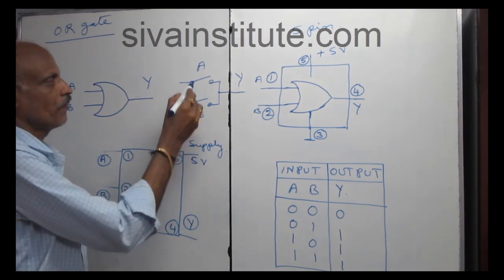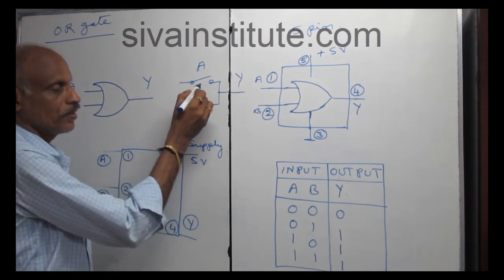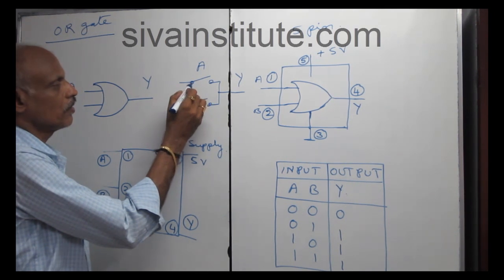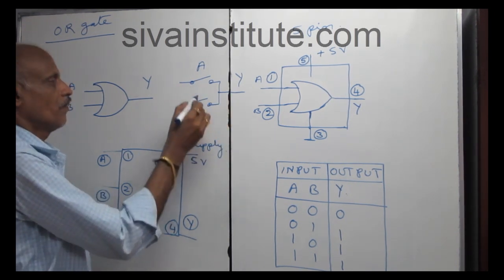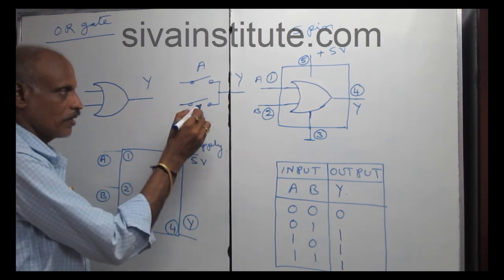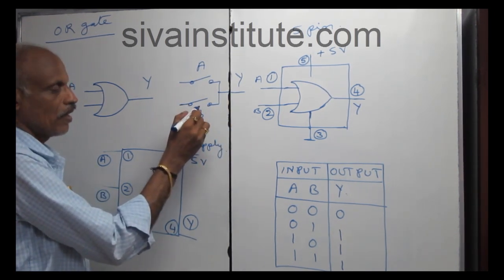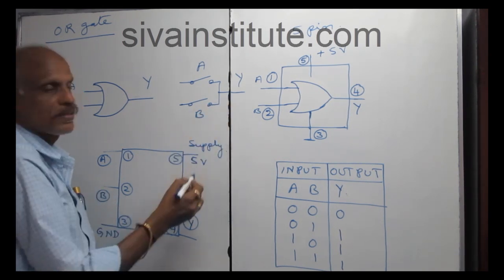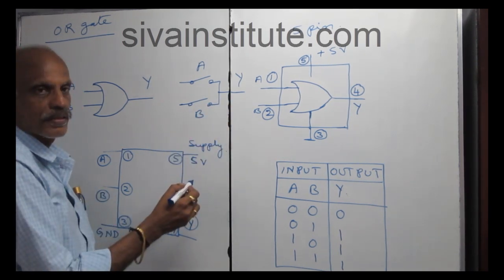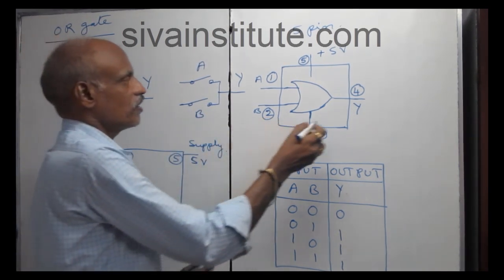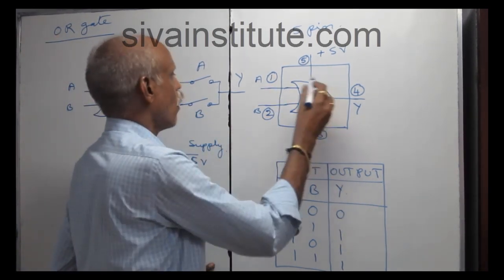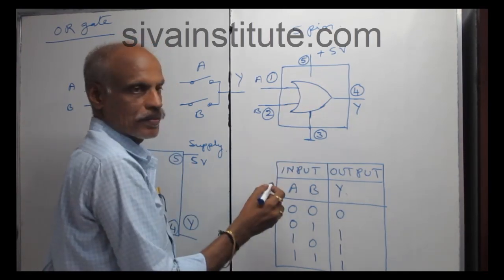See here, this is a switch. When this switch is on, this voltage comes out from here. When this switch you will turn on, this voltage comes out from this place. So, this is a 5-pin R-Gate.